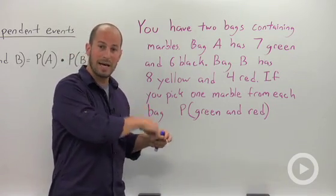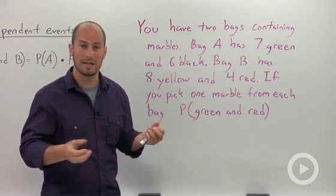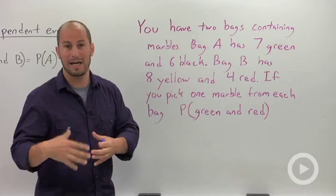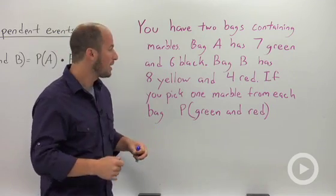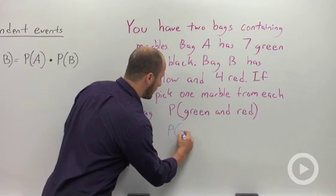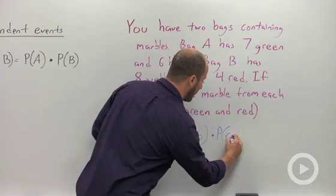So choosing a marble out of bag A and then choosing a marble out of bag B are completely independent. It doesn't matter what happens out of the first bag, the results from the second bag are independent from that. So what we can do then is just find the probability of picking a green times the probability of a red.